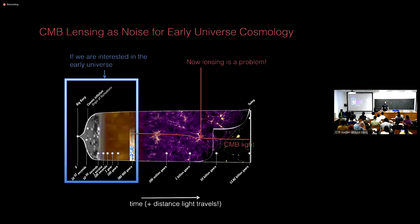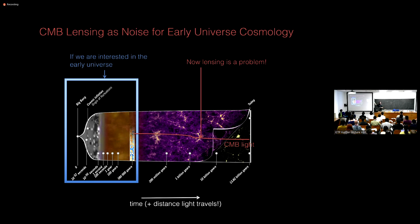In the last part of my talk, I want to take a very different perspective. So far I've talked about lensing as a really cool signal that tells us about neutrinos, sigma-8, and dark energy, and lets us map all the dark matter. But now I want to say: I hate lensing. Lensing is a huge problem because it prevents me from seeing the primordial CMB and prevents me from learning about the early universe. Lensing is a real limiting factor if we're interested in understanding the physics of the early universe and inflation.